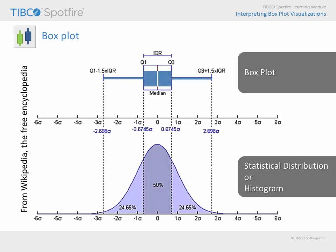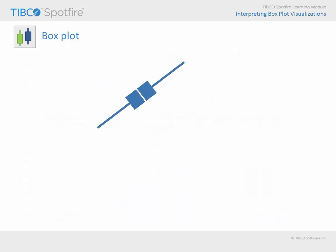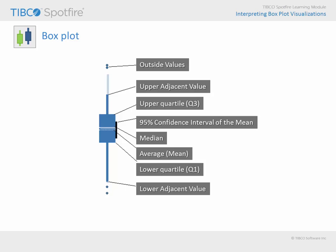Spotfire represents these symbols for each categorical grouping in a vertical orientation. Data which falls outside of the upper and lower adjacent values is shown as individual markers, known as outside values. In addition to the median, first and third quartile, and upper and lower adjacent values, other symbols can be added to your boxplot visualization, including the average and the 95% confidence interval.